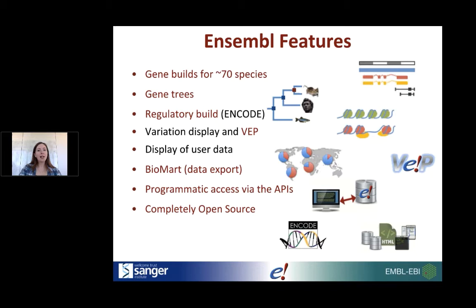A few things are specific to Ensembl: we run the gene builds ourselves — the Ensembl gene build. We run our own gene tree pipelines internally. We have a team doing the regulatory build in-house. The Variant Effect Predictor is built within Ensembl. BioMart is only available in Ensembl. We're the only genome browser providing programmatic access via APIs, and we're the only genome browser that is completely open source.